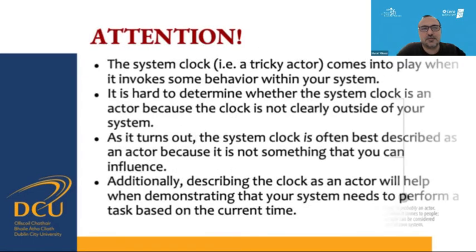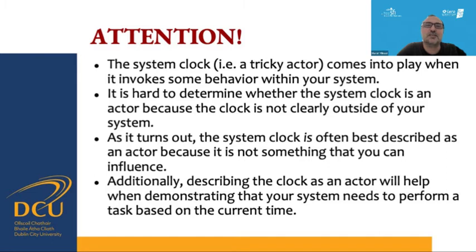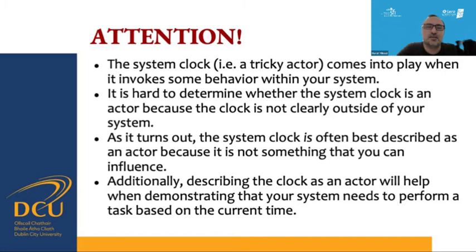Here is an interesting example: the system clock, which comes into play when it invokes a behavior within the system. The system clock is an actor because it is not clearly outside of your system — it is inside. However, the system clock is often best described as an actor because it is not something you can influence based on your system design. Additionally, describing the clock as an actor helps demonstrate that your system needs to perform a task based on the current time. Most of the time other elements are easier to identify, but the system clock could be inside the system and still be considered an actor because we cannot alter it.